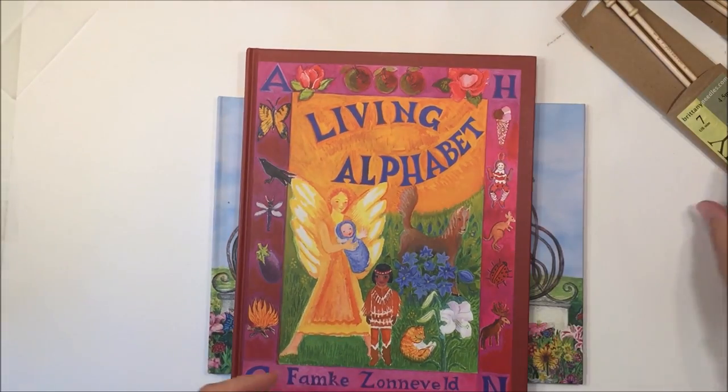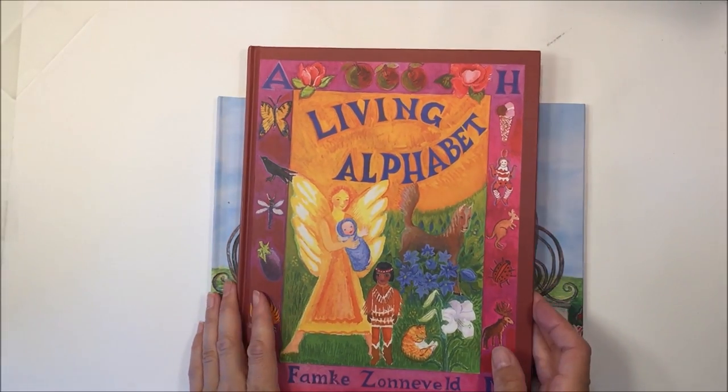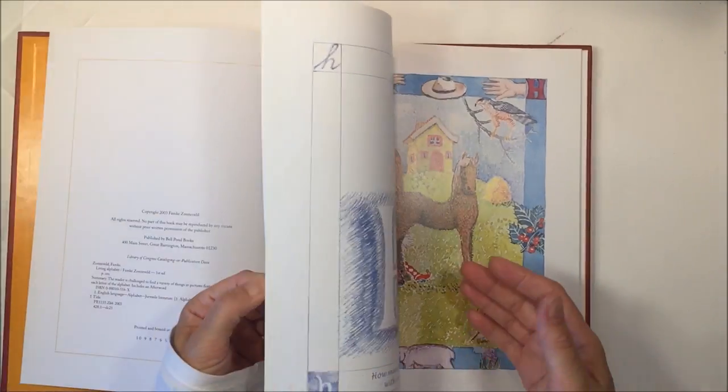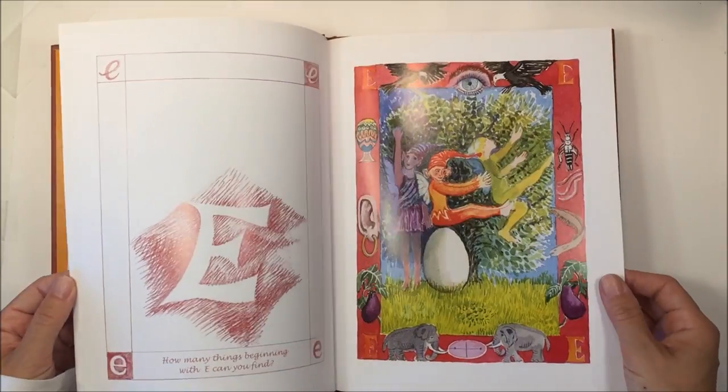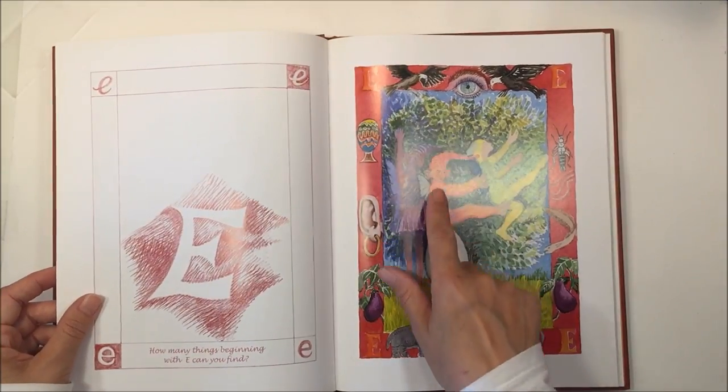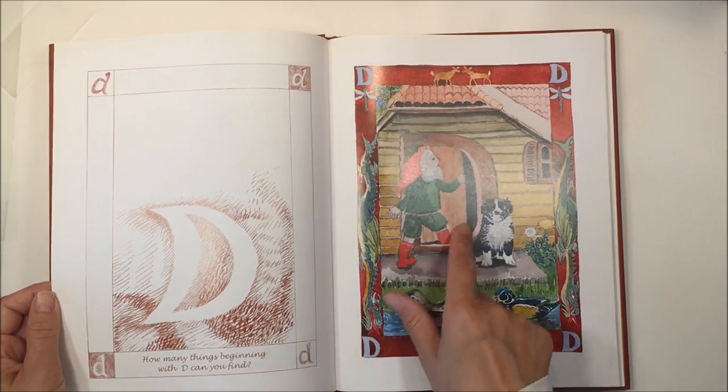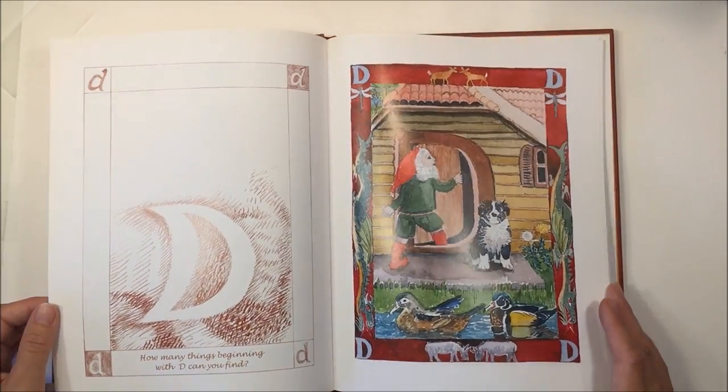I want to show you a couple of books that will be really handy for first grade. The first one is called The Living Alphabet. This is a great addition to first grade because it goes through beautiful illustrations and where you can kind of see the letters emerge from the illustrations. So this is a great book to have on hand.